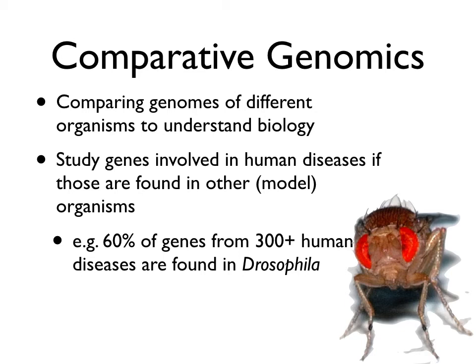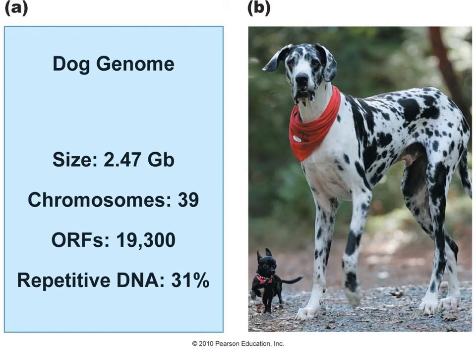Even a fruit fly has roughly 60% of the genes that you have, so studying how mutations to those genes affect fruit fly biology can be helpful in understanding human disease. Dogs have nearly 75% identity with human genes — a slightly smaller genome with more chromosomes but about the same number of genes, and 75% perform the same function. Studying how mutations causing disease affect dogs, and how we might treat those conditions, is helpful for human health.